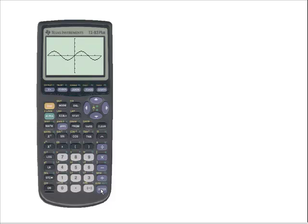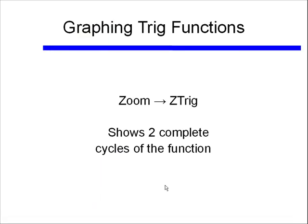Because that's a good thing to look at when we're trying to graph these functions, and that's all there is to it. Again we use that ZOOM and ZTrig in order to show our two complete cycles of our trigonometric function.